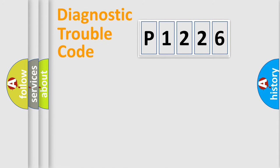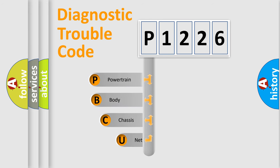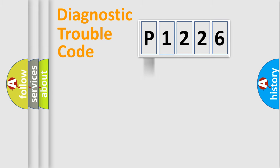Let's do this. First, let's look at the history of diagnostic fault code composition according to the OBD2 protocol, which is unified for all automakers since 2000. We divide the electric system of automobile into four basic units: Powertrain, Body, Chassis, and Network.